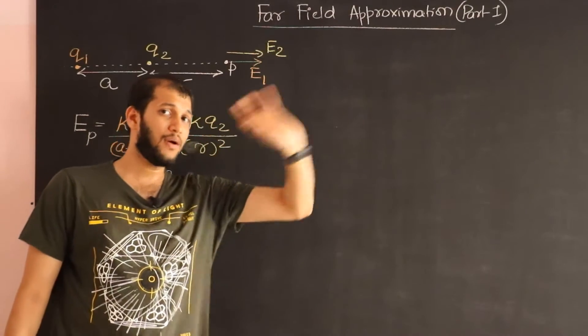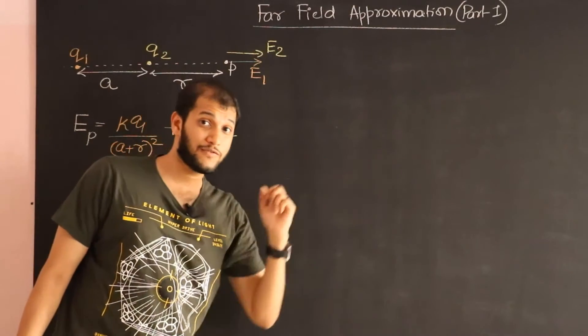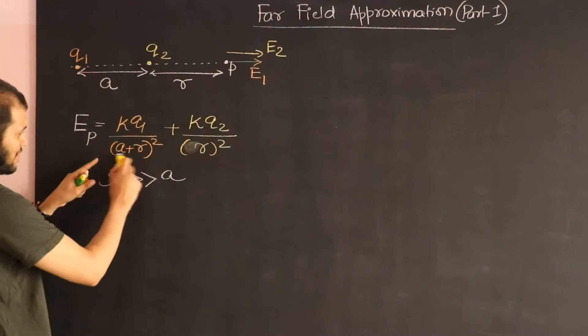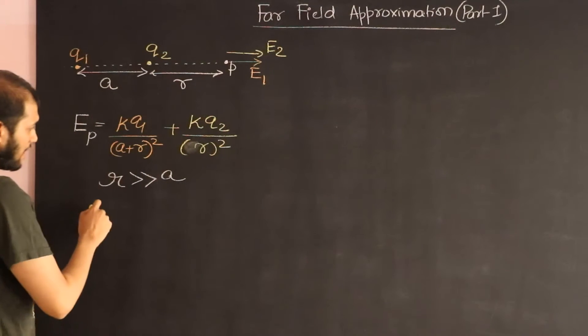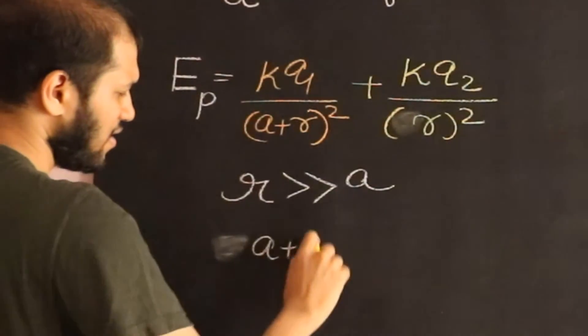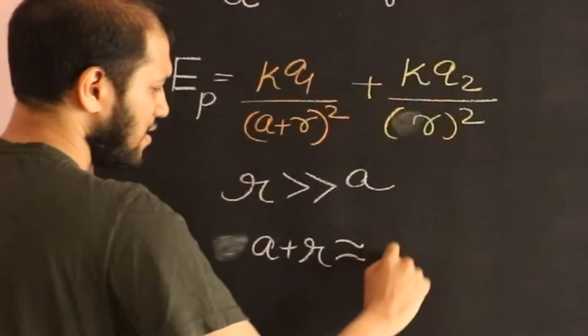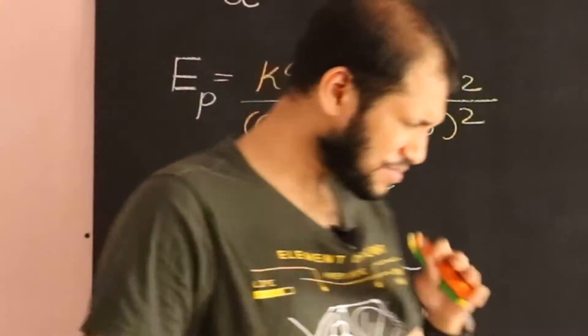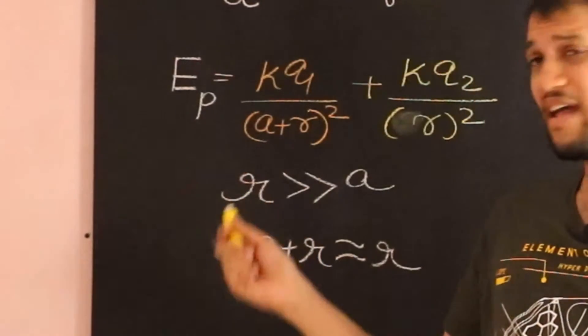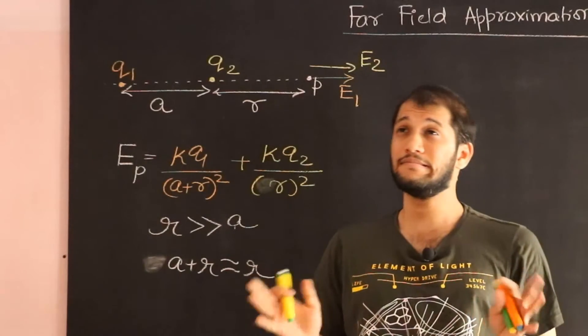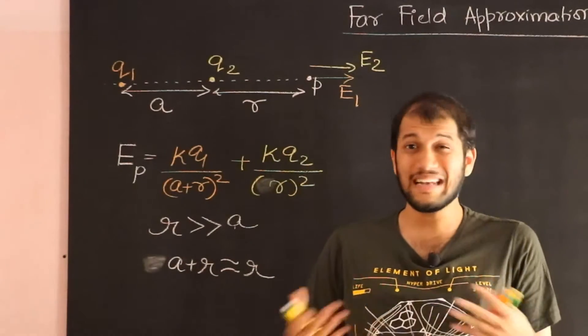When I do that, notice over here I can make a small assumption. I can say a+R is almost equal to R. You can think of R as say 100 meters and you can think of a as maybe a meter or maybe a centimeter. 100 meters plus 1 centimeter is roughly 100 meters.